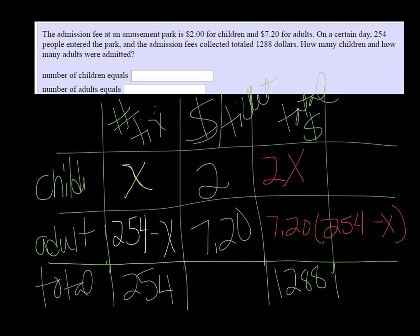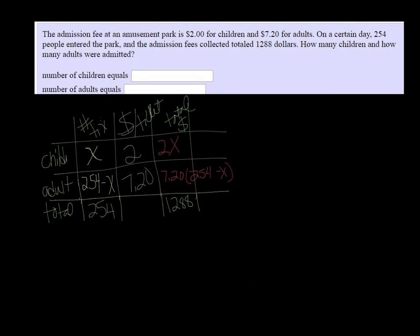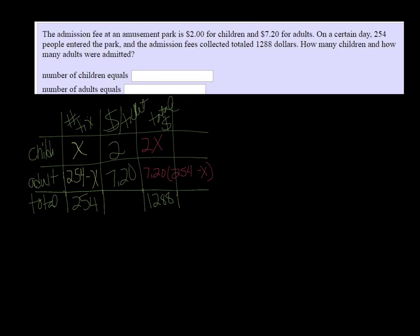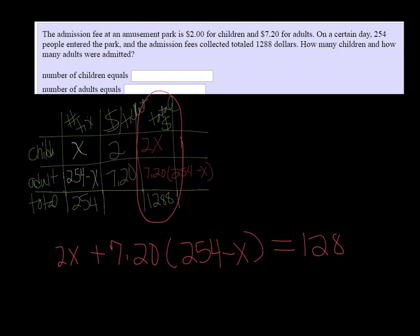So we have enough to make an equation now. So I'm going to scoot this up. My equation comes from that last column, the total amount made, and it is 2X plus 7.20 parentheses 254 minus X, close parentheses, equals 1,288.